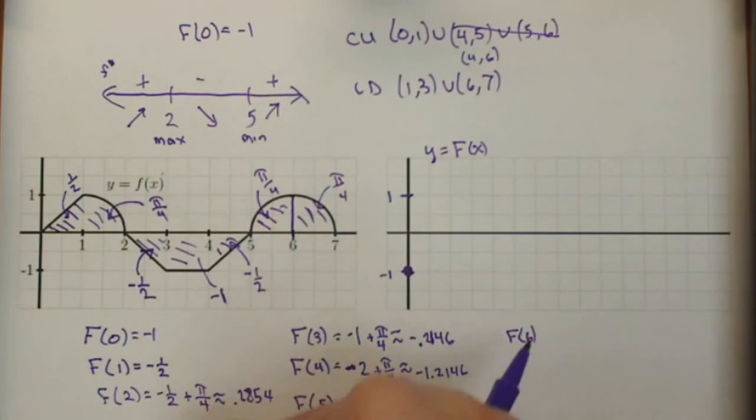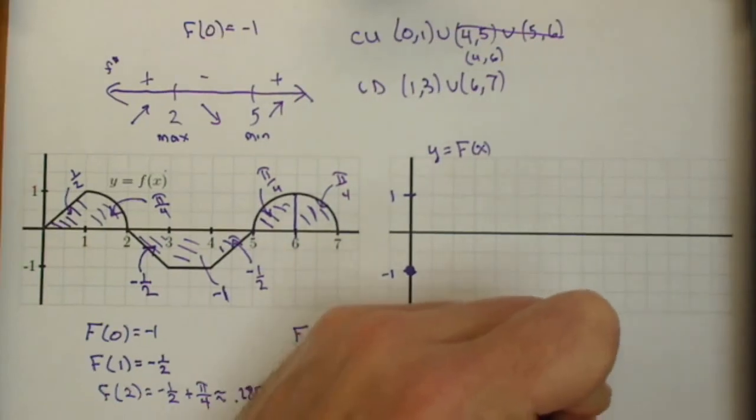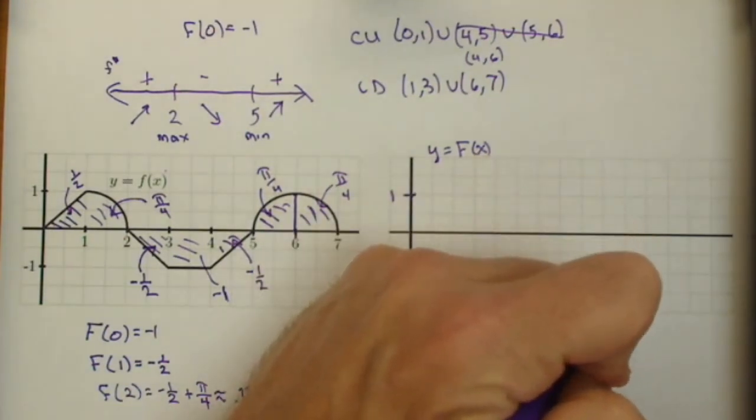So our last two steps are going to be pi over 4 in the positive direction. So adding pi over 4 to this number, we get minus 5 halves plus pi over 2. Which is about negative 0.9292.